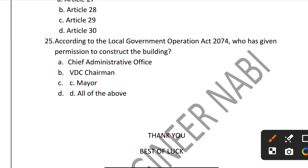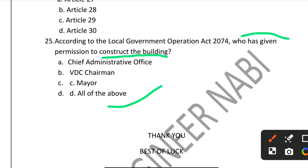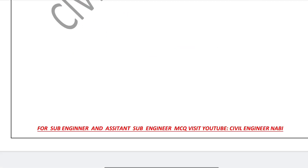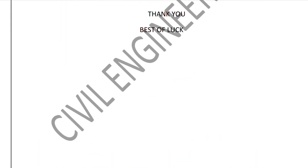Question 25 (Last Question): According to the Local Government Operation Act 2074, who is given permission to construct a building? Options include chief administrative officer, BDC chairman, and others. The correct answer is the chief administrative officer.